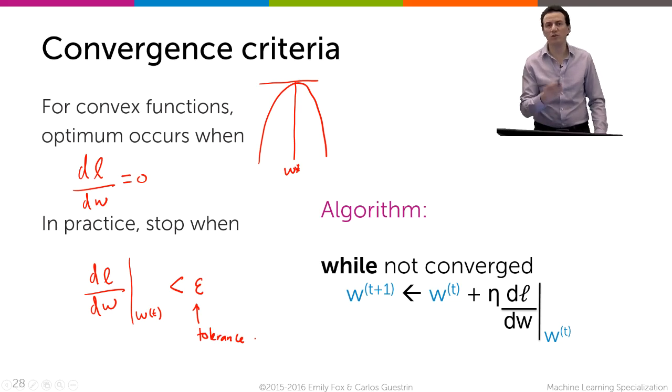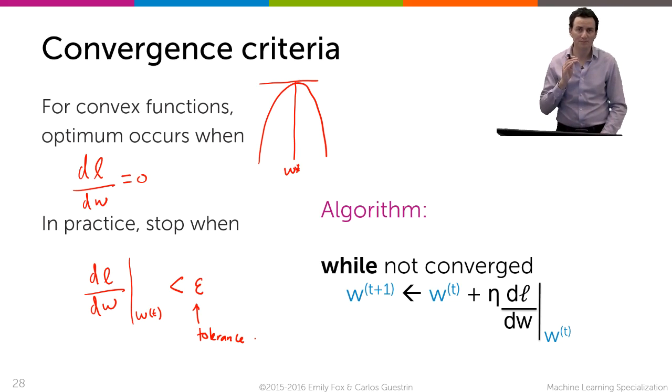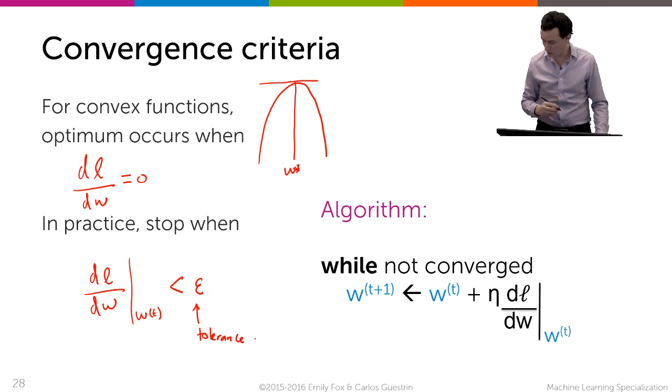So we'll stop when the derivative is smaller than some tolerance parameter epsilon. And you know, we set that to some small number, 0.001 or something. Depends on your problem, you'll explore this a little bit in your homework. But if you keep going, you won't get exactly to the top, but you're going to get pretty close to the top, and that would be your w hat. So we'll continue going up and up and up until our derivative is sufficiently small.